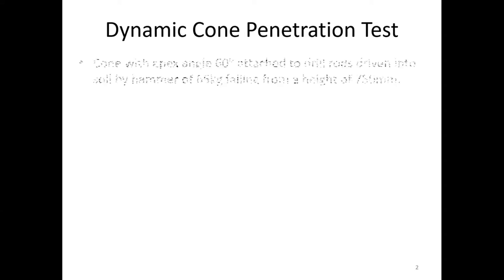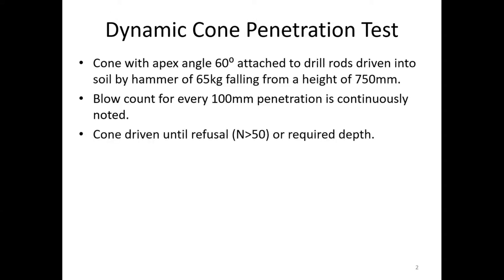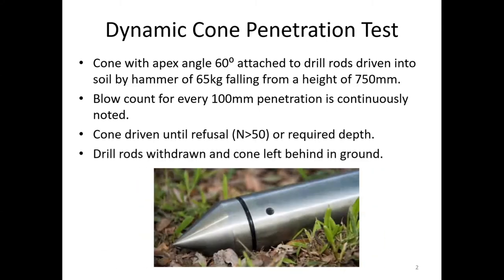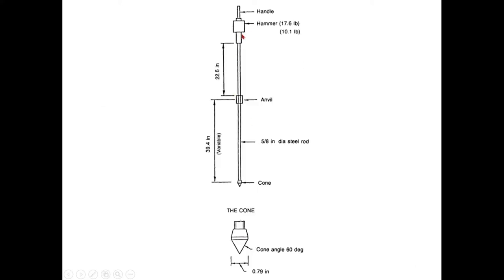In the case of dynamic cone penetration test, instead of a split spoon sampler, we use a cone with an apex angle of 60 degrees, as shown in this figure. You can see the cone here — this is what is used for a dynamic cone penetration test. This cone is connected at the bottom of the drill rod.